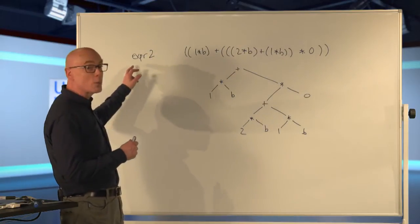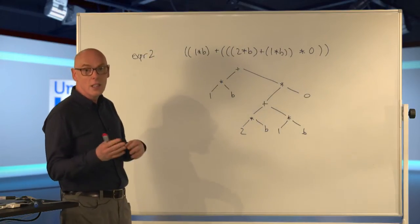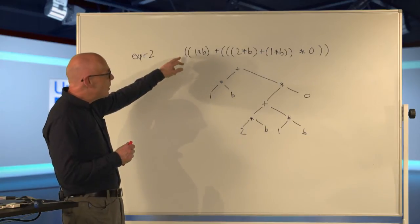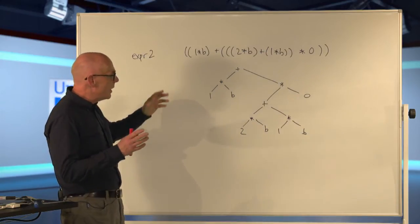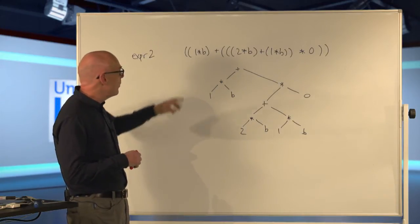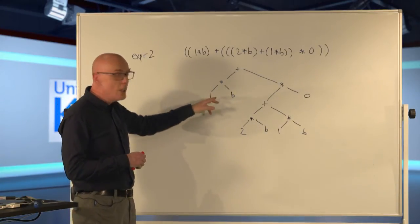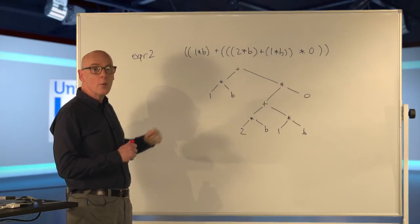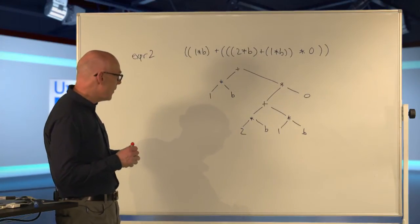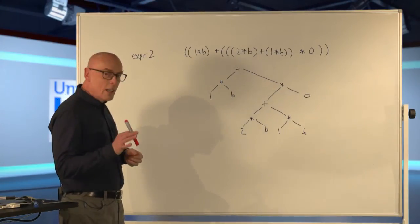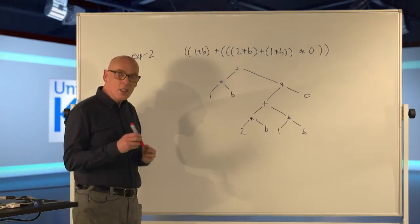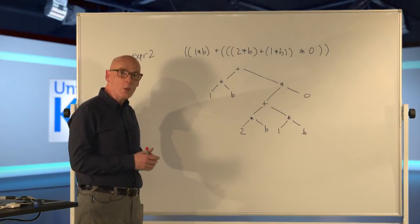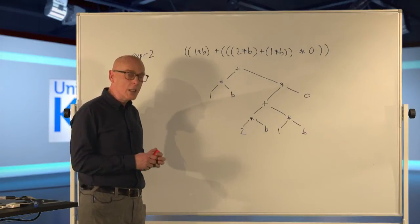You can see I've got expression two — it's in the code — and here is the expression written out in printed format. And here's what it looks like if we draw it as an expression tree. Now what we can see in this is that there's a whole lot of simplifications that we might do in here.